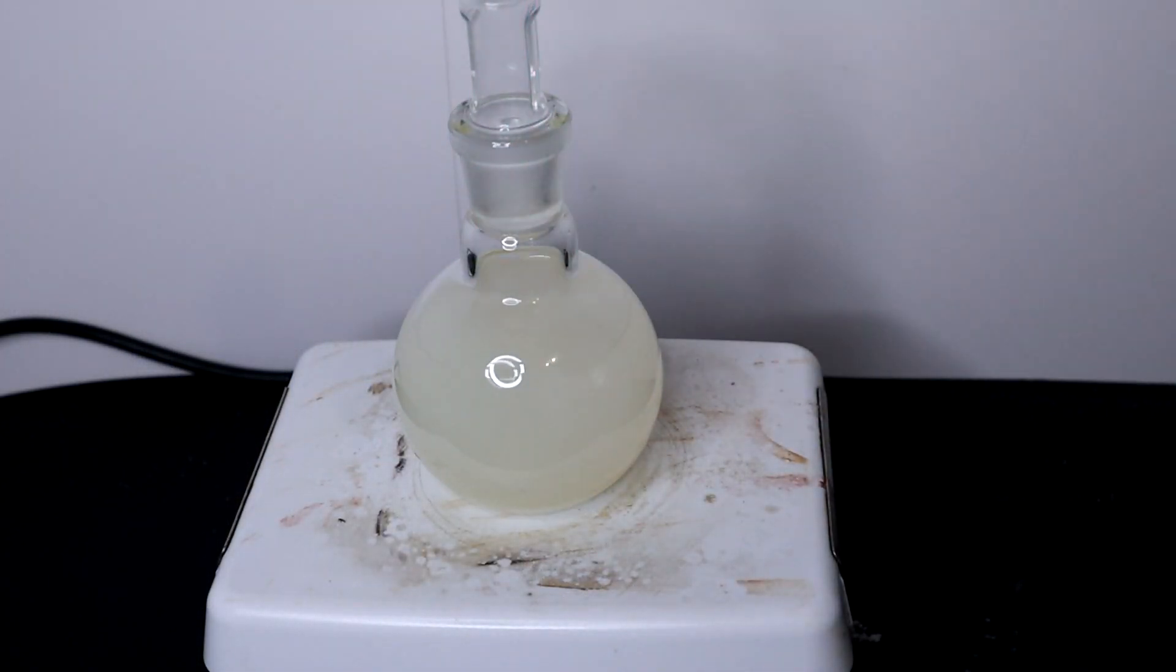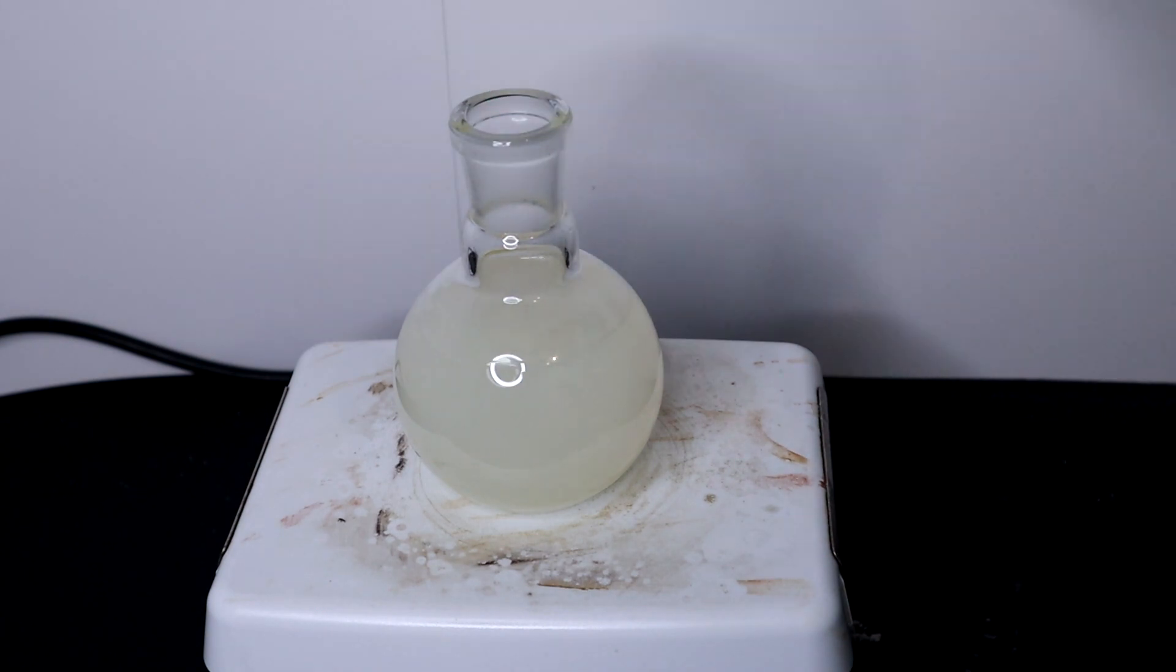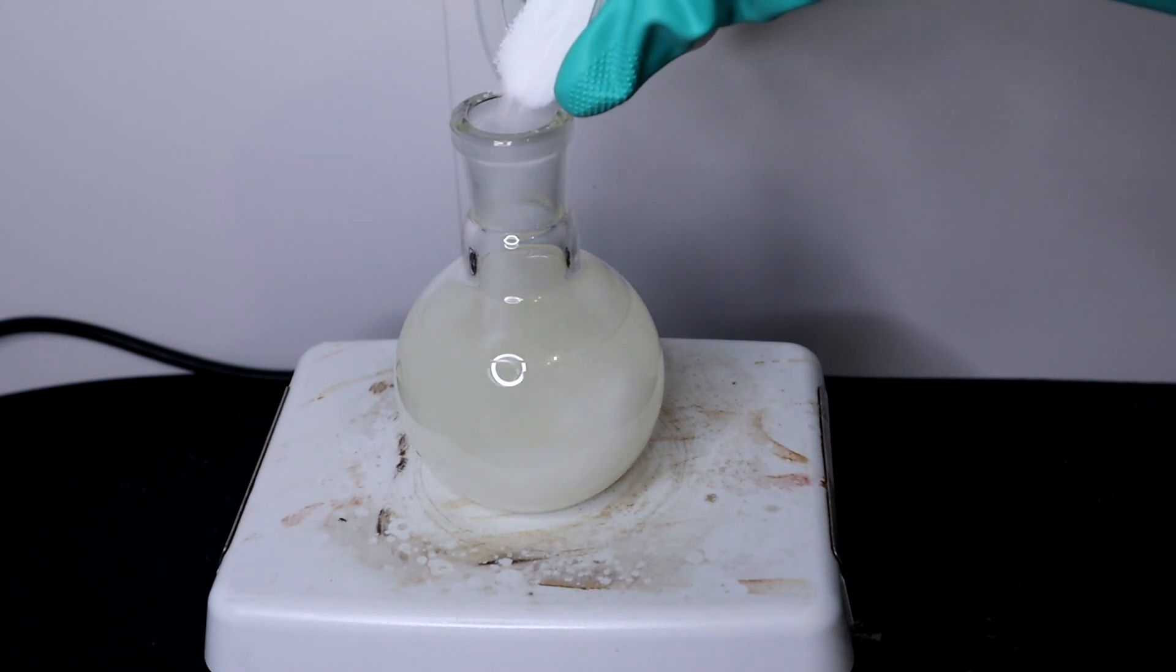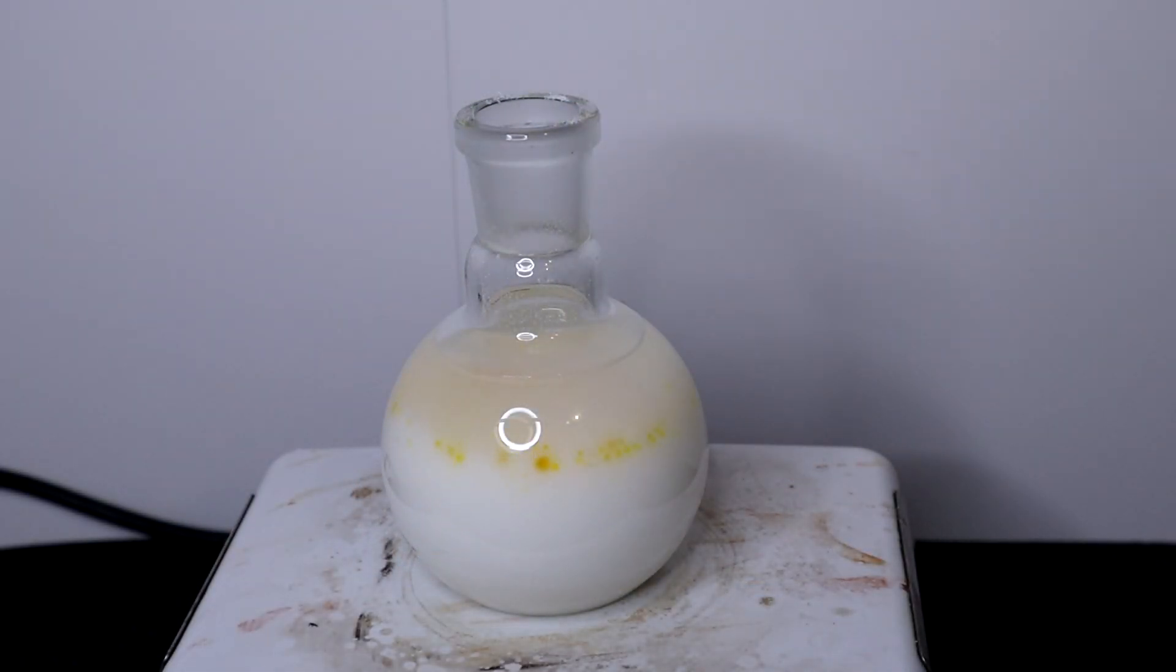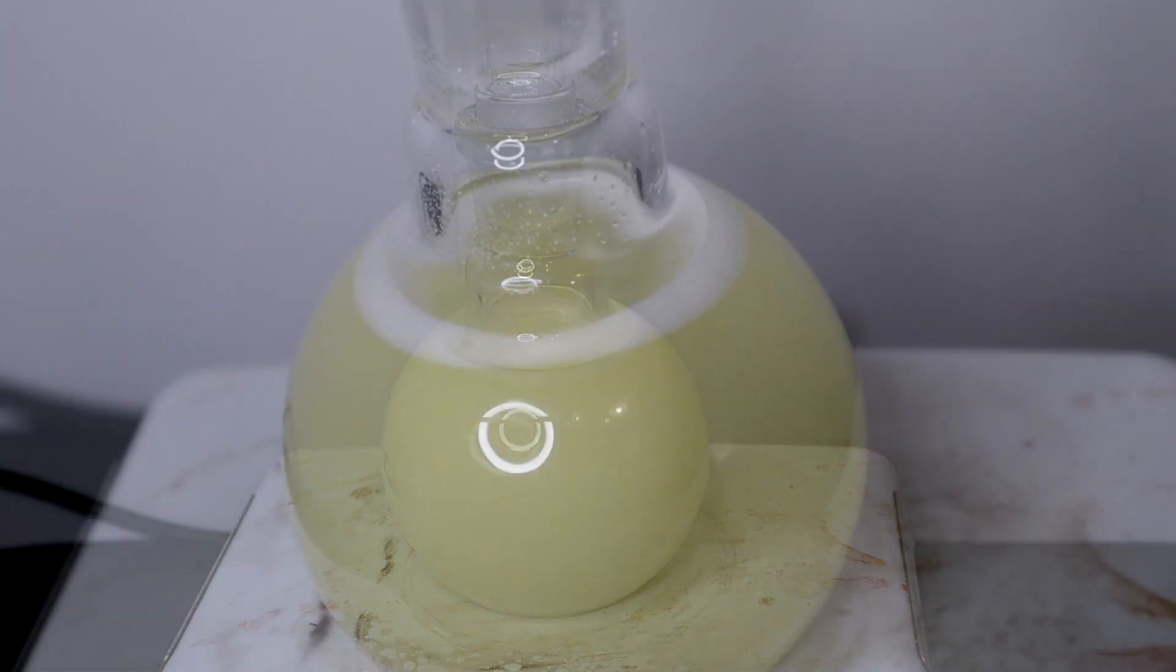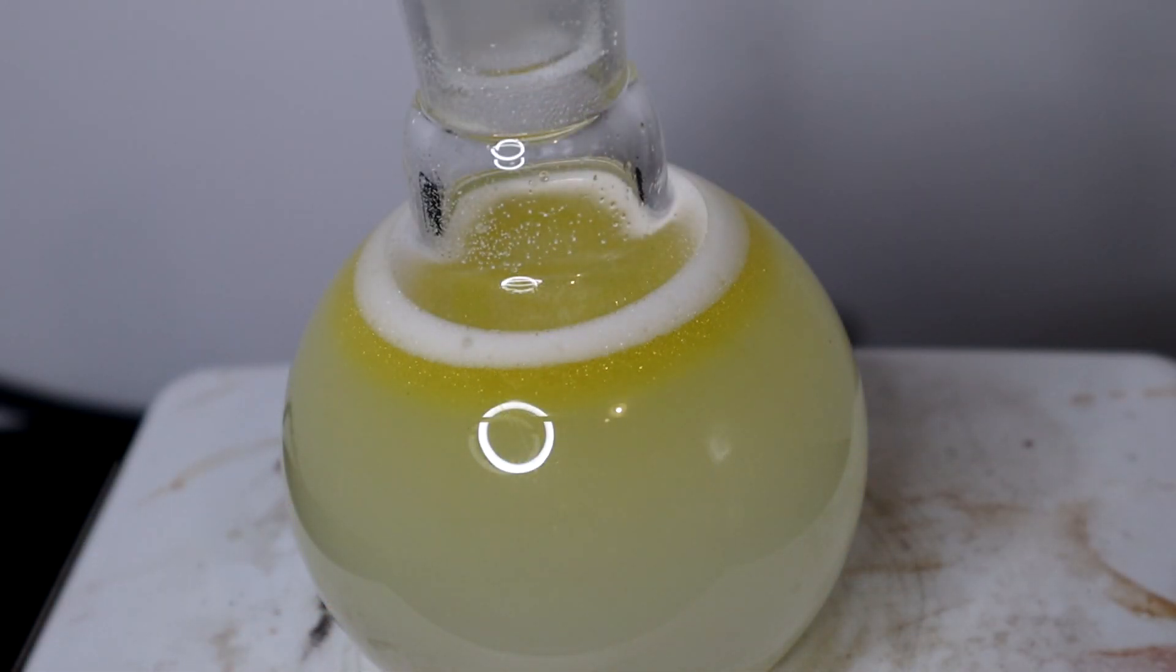As the solution is quite turbid, and just because aniline is slightly soluble in water, I decided to add 60g of salt to the solution in order to decrease the aniline's solubility and hopefully separate the aniline. After stirring, a golden yellow orange layer formed on top.